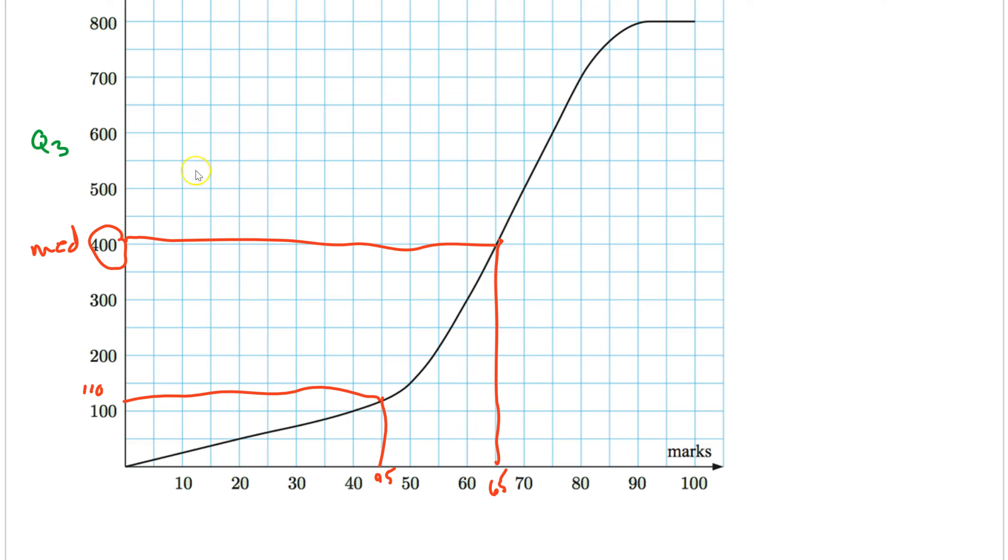So we have 75 for Q3. Q1, halfway between 400 and 0. So about 200. So Q1. Go across. And go down. Another one I've got to estimate. Looks like, let's say 54.